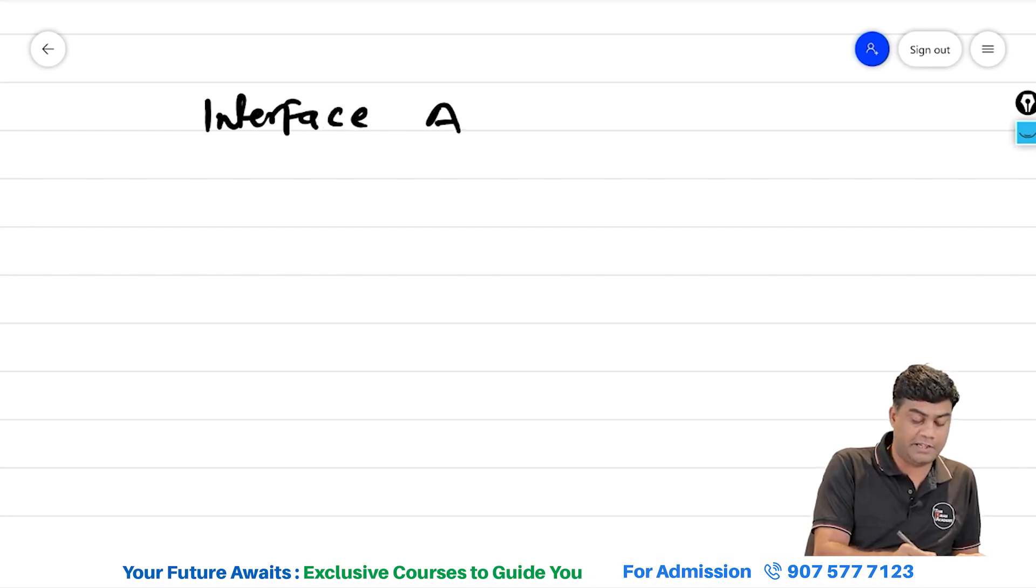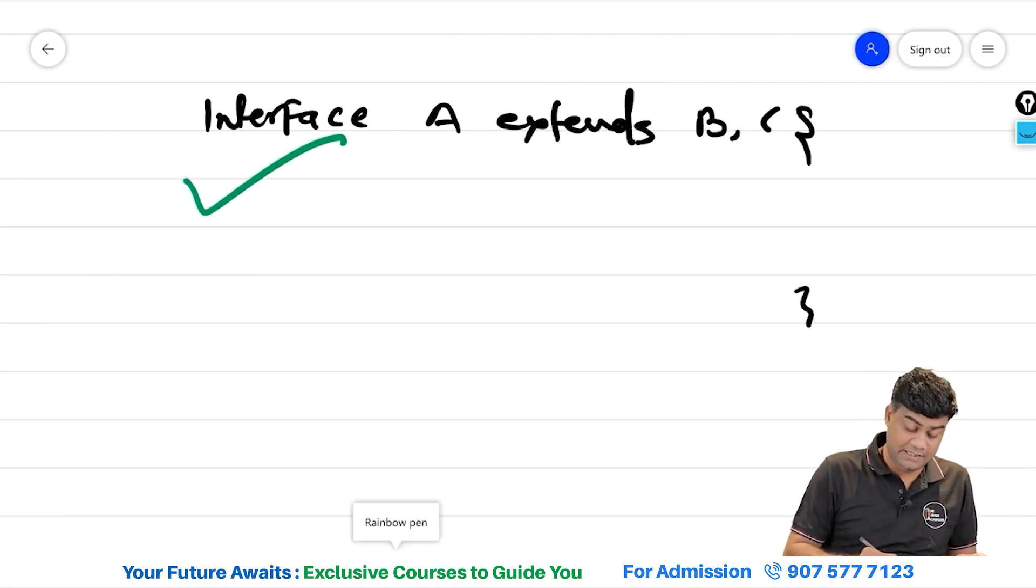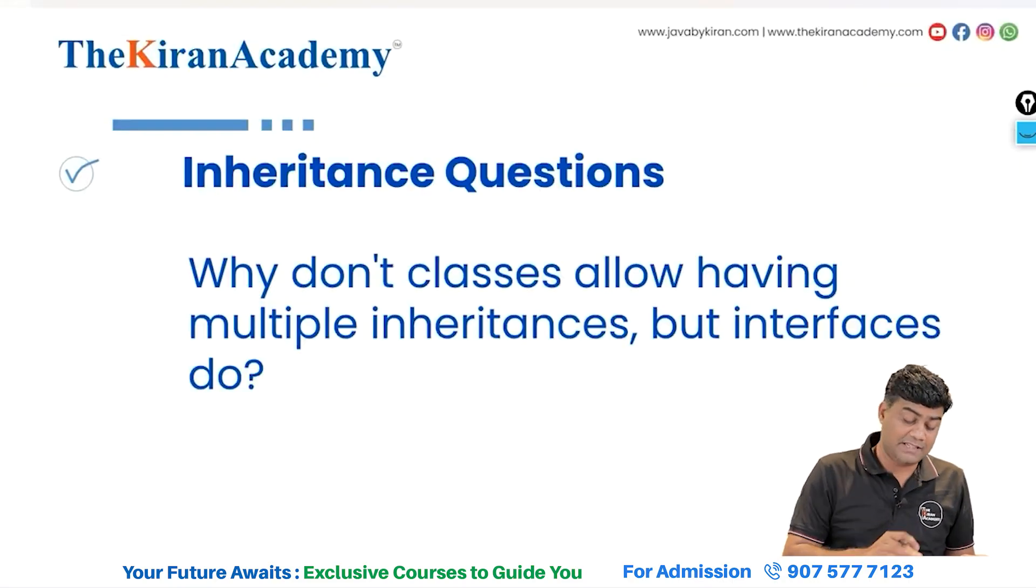Interface A extends B, C. Is this allowed? Answer is yes. But in case of classes, it is not allowed. Please remember these two things.